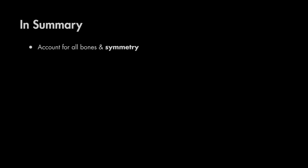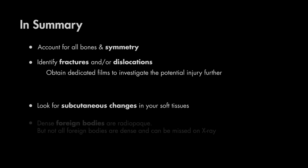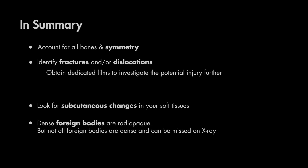So that's it for the assessment of bones and soft tissues. Make sure you account for all bones and their symmetry on x-ray. Evaluate for fractures and dislocations, and if you have any abnormalities, you may want to consider additional dedicated films. When assessing the soft tissues, look for evidence of possible air or subcutaneous emphysema, and make note of hyperdense materials which could suggest a foreign body.